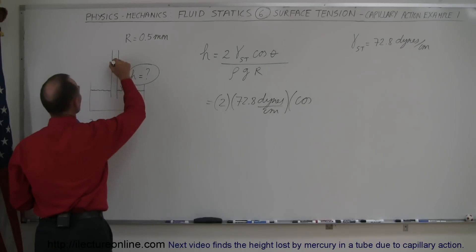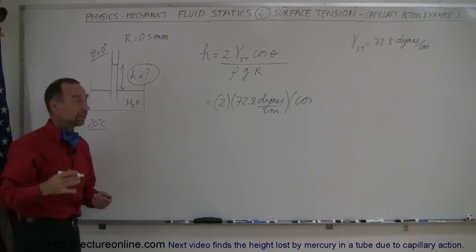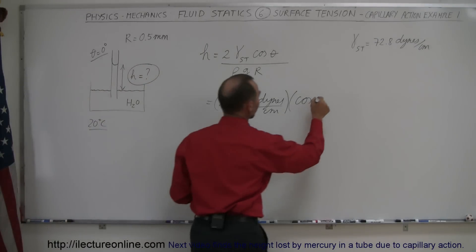Now in this case, we can assume that the contact angle theta is equal to 0 degrees, because that's what it is between water and glass. So it would be the cosine of 0 degrees.